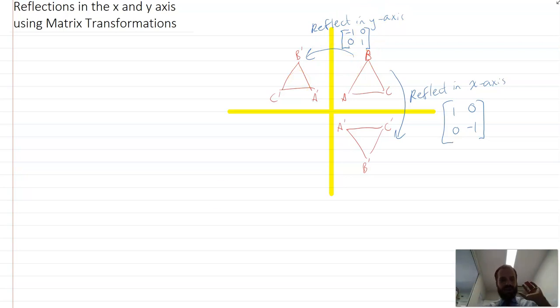I reckon we're done there. That's reflections in the x and y axis using matrix transformations. I could go through some examples, but they're not going to be very special here. We just multiply by this matrix and that gives us our new image.